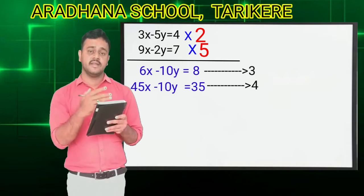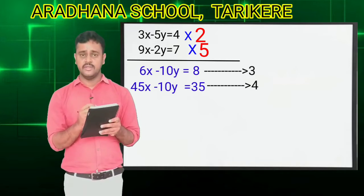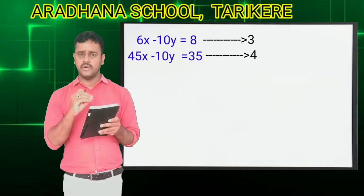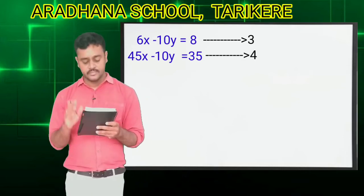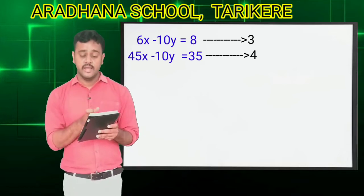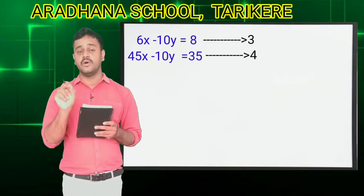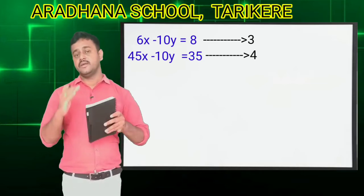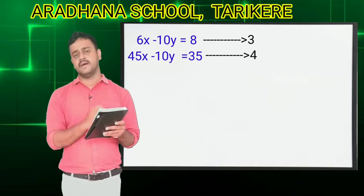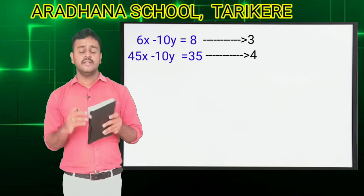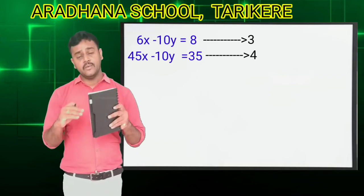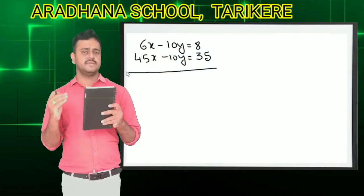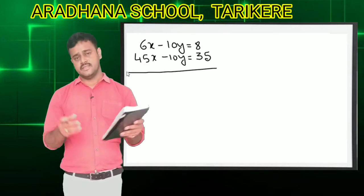I will name these as equation 3 and equation 4. Now I will use equation 3 and equation 4 — the first two equations I will use later. I want to eliminate y. Look at the coefficients — the coefficients for y are minus 10 and minus 10. If you want to eliminate, the symbols must be different. But here both symbols are minus, so we cannot subtract directly — we can add. I will change the symbol of one of the equations. I will choose the fourth equation because it is simple to change the symbols.